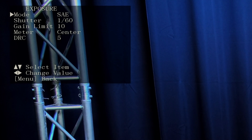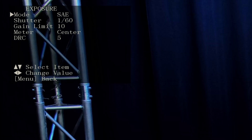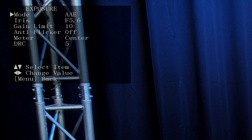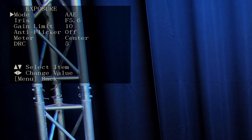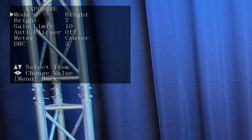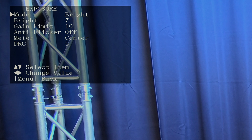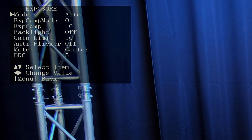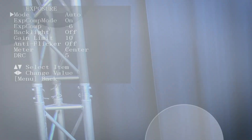This is shutter priority. This mode is aperture priority. This bright mode just makes everything bright, so if you're in a low lit area, that might be best. And then we're back in auto.